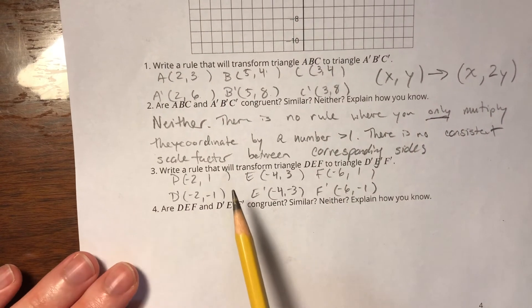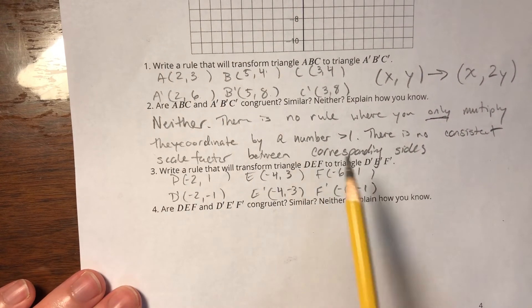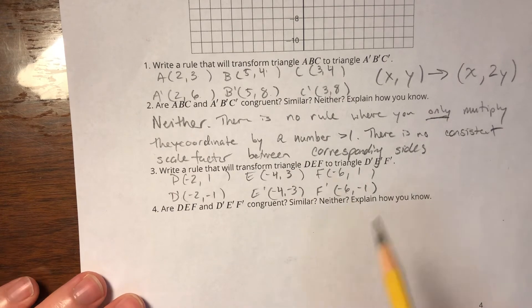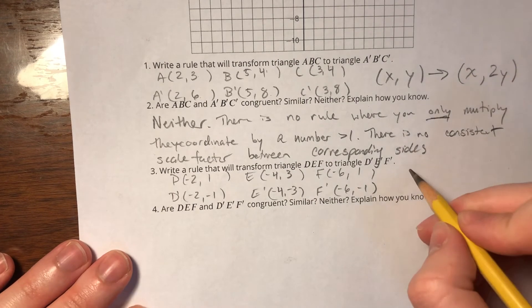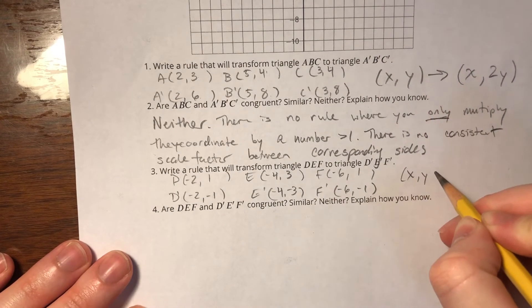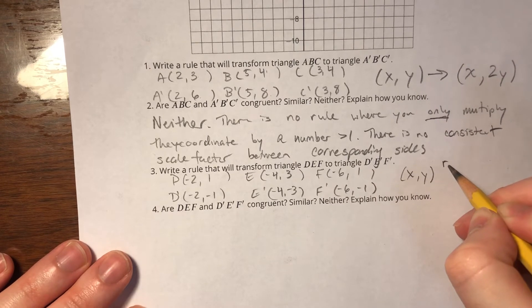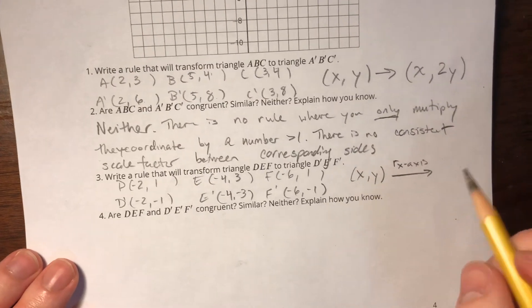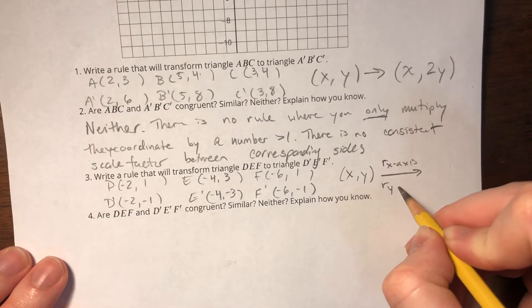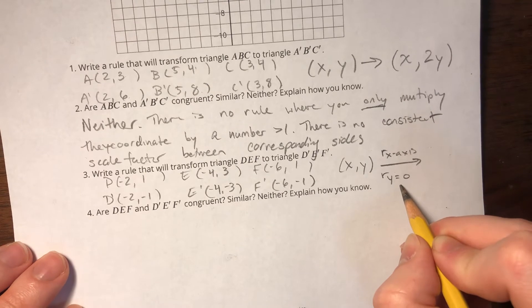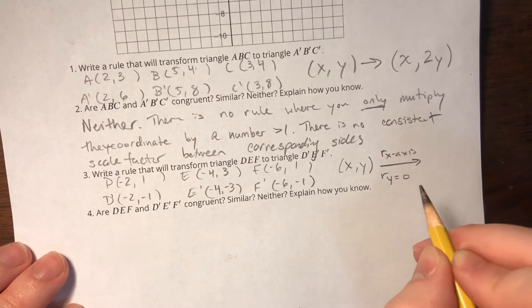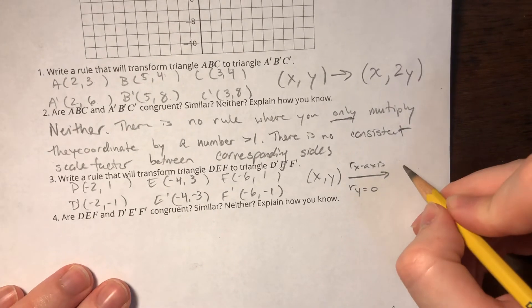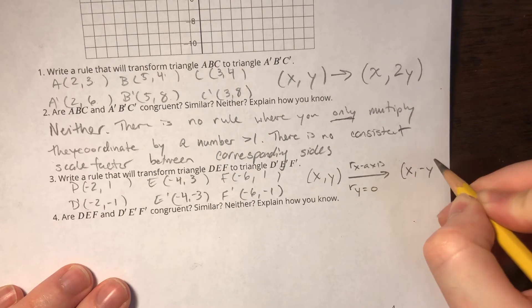And if I look at these pairs of coordinates, I can see that only the y is being negated. So anytime only the y is being negated, that is just a reflection over the x-axis. And if you remember, I prefer to call this a reflection over y equals 0 because that reminds me that only the y is the part being negated. So there we get (x, -y).